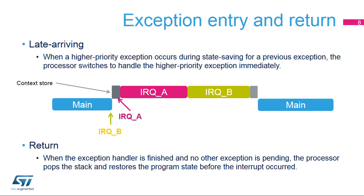When an interrupt arrives, the processor first saves the program context before executing the interrupt handler. If the processor is performing this context-saving operation when an interrupt of higher priority arrives, the processor switches directly to handling the higher priority interrupt when it has finished saving the program context. Then tail-chaining will be used prior to executing the IRQB interrupt service routine. When all of the exception handlers have been run and no other exception is pending, the processor restores the previous context from the stack and returns to normal application execution.